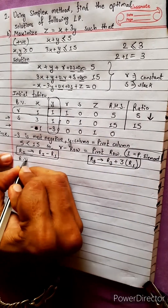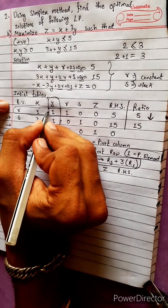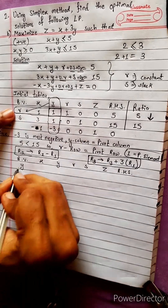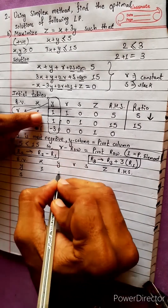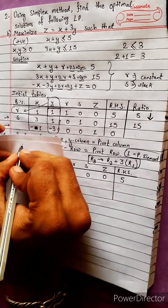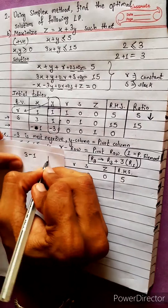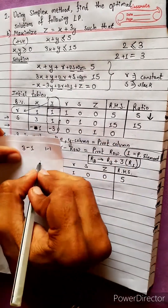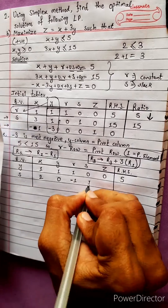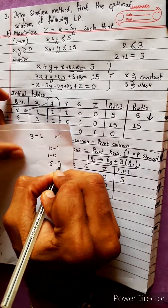New basic variables: x, y, r, s, z, r, hs, ratio. The pivot element was at row 1. New R1: y enters, s leaves. Row 1 becomes: 1, 1, 1, 0, 0, 5. R2 = R2 minus R1: x: 3 minus 1 = 2; next: 1 minus 1 = 0; then: 0 minus 1 = minus 1; 1 minus 0 = 1; z: 0 minus 0 = 0; rhs: 15 minus 5 = 10.